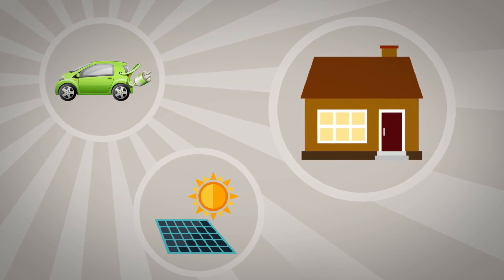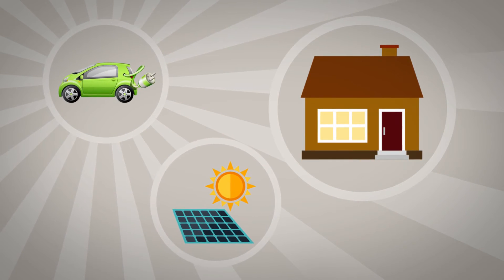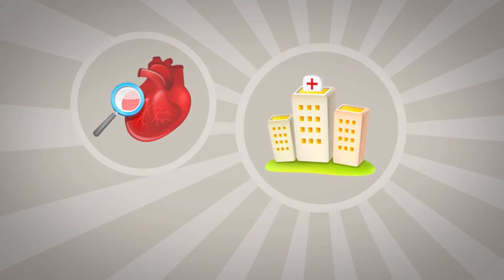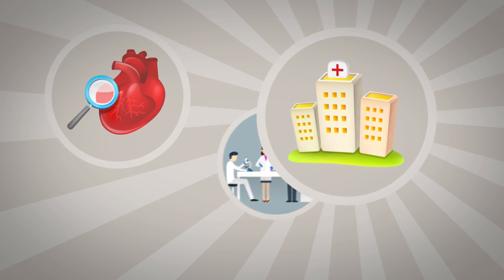If you need a new organ, such as a heart or liver, you won't have to wait for someone to die. Replacements will be grown in a lab. Look for this process to start with simpler structures like skin.